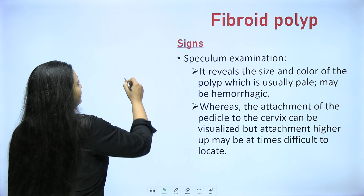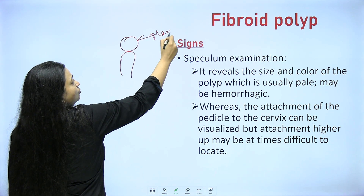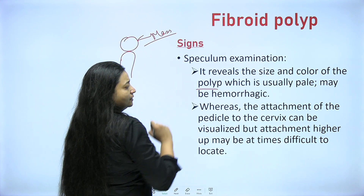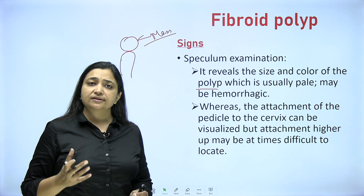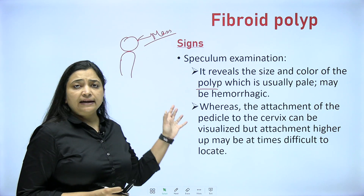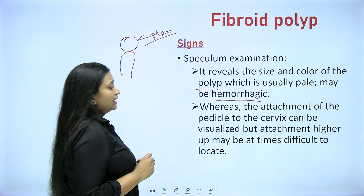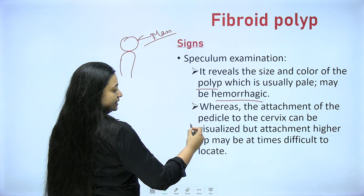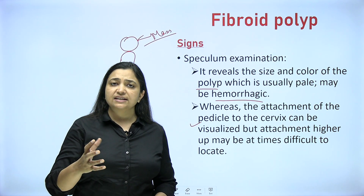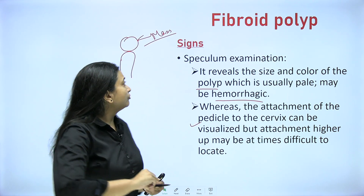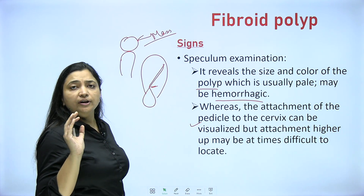On speculum examination, you will be looking at the mass directly if it has already come out of the cervix - the size and color of the polyp can be seen. The polyp can be pale if it has just come out, because the fibroid is a pale structure with a whorled appearance. But if it is long-standing and the fibroid came out much earlier, you can find hemorrhagic changes and necrosis. The attachment of the pedicle to the cervix can be visualized, but attachment higher up cannot be seen - if it is arising from the fundus, you will only be able to see the mass.